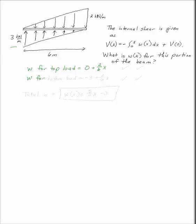W for the bottom load has an intercept of negative 3. Remember, w being positive down means that if you have a load that's pushing up, it's got to be a negative number. So negative 3 and the rise over run will be a positive number then, 3 over 6, x.